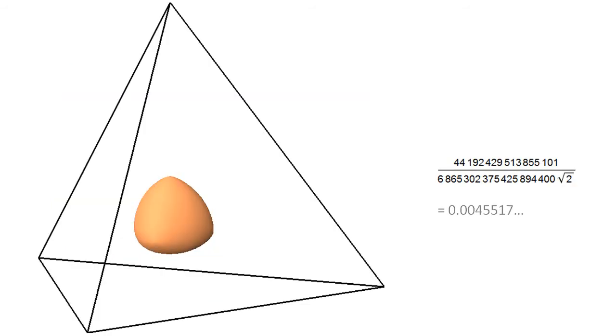This is the surface produced by Loop's algorithm with the tetrahedron as input. The enclosed volume is the fraction indicated.